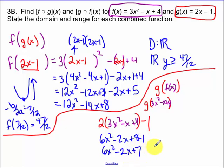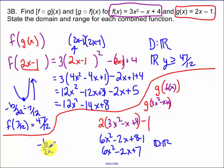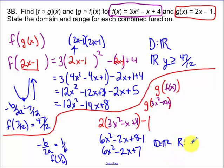This is another parabola, so the domain is all real numbers. Again for the range I find the vertex using negative b over 2a — the x value of that vertex is 1/6. Then I evaluate the composition function at x equals 1/6 and the range ends up being y greater than or equal to 41/6. I used my calculator for that piece.